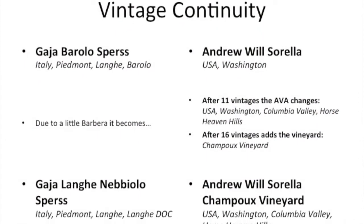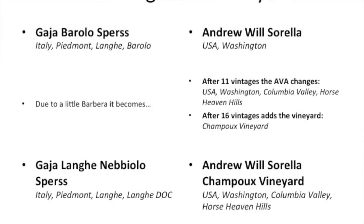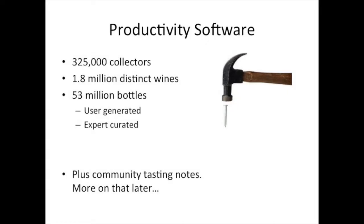It gets a little messier because the joy of wine is some of the details. Take Gaja Sperss — it's really two wines: it used to be a Barolo, but with a little Barbera blended in it became Langhe Nebbiolo because it can't be bottled as Barolo anymore. Or Andrew Will Sorella, if you know Washington State — same wine for 20 years, same vineyard, everything, and we had to come up with a way to stitch those together. The result: 300,000-plus collectors, 1.8 million wines, 53 million bottles, and constantly growing.